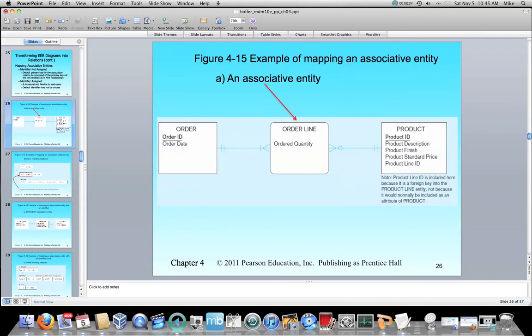So we have an associative entity right here, the very common order to product, and we've got a line item in an order, order line. So that's going to keep track of the order that this is associated with, what product, and how many of that product are being ordered. So that one order can be associated with many products, and then each of those products associated with the order can have different quantities.